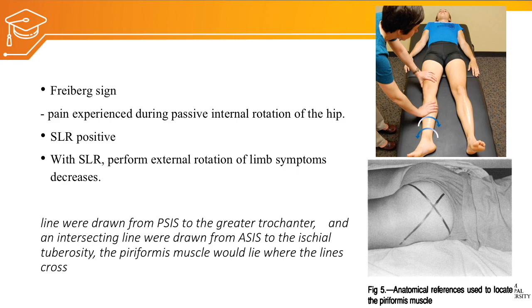To palpate the piriformis muscle, draw two lines: one from the PSIS to the greater trochanter, and another from the ASIS to the ischial tuberosity. The point where these two lines cross is where the piriformis muscle is situated. Compressing this area will aggravate the symptoms.